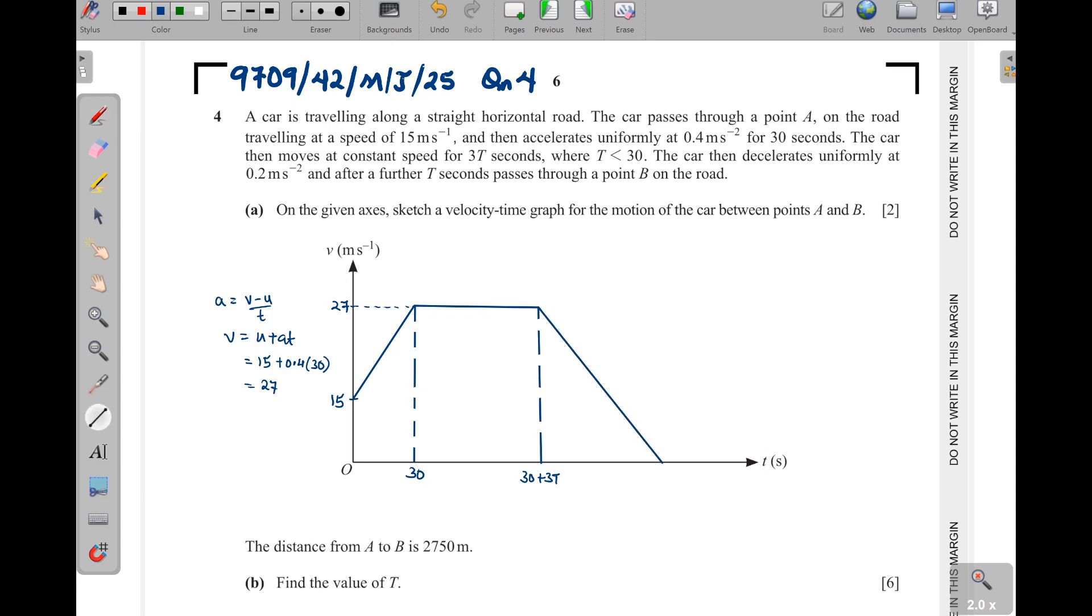Then they said that the car accelerates uniformly at 0.2 meters per second squared for a further T. Now, we are going to get T and add it on this. That means we shall have 30 plus 4T. So I'll extend it a little bit because this is a bigger time compared to this one here. And this will be 30 plus 4T. 30 plus 3T is here. That is our diagram.